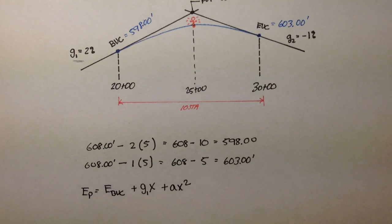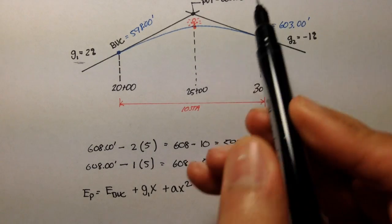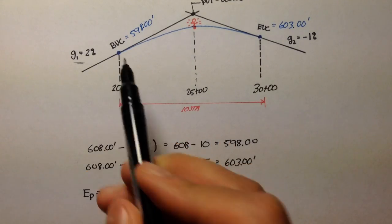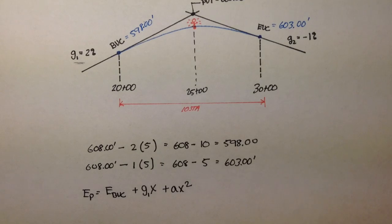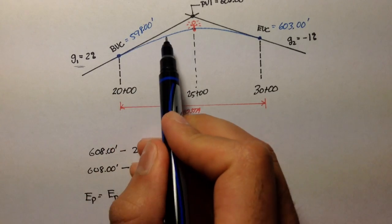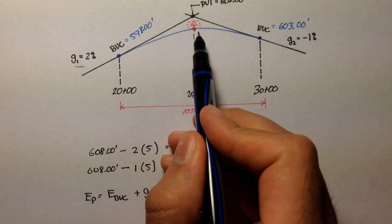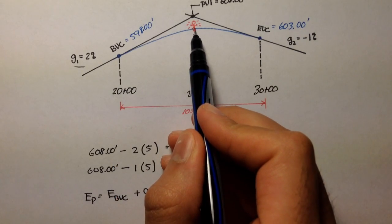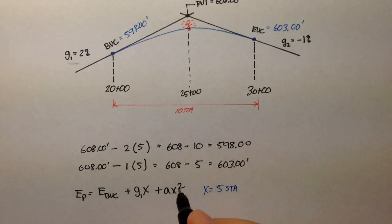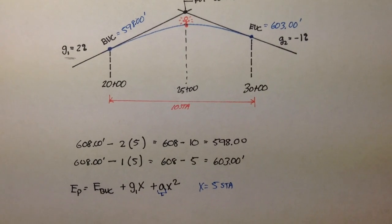EBVC is the elevation of the beginning of vertical curvature, and we just figured that out. That was 598. Plus grade 1 times X plus the term AX squared. We know that our location for this point is located 5 stations from BVC. So that means X is 5 stations. X is simply the distance from BVC to the point you're interested in.